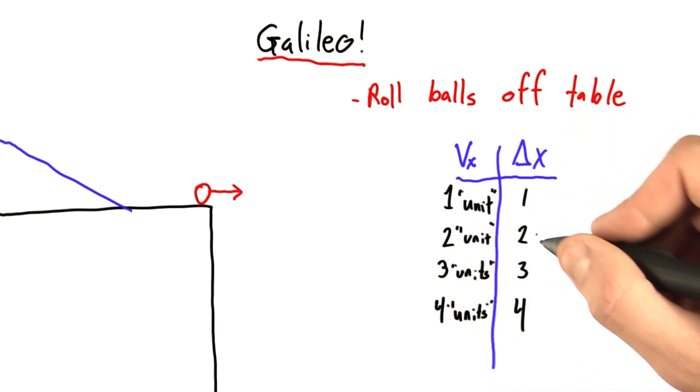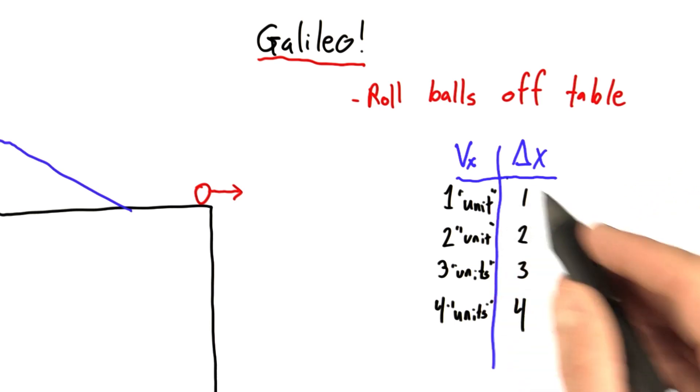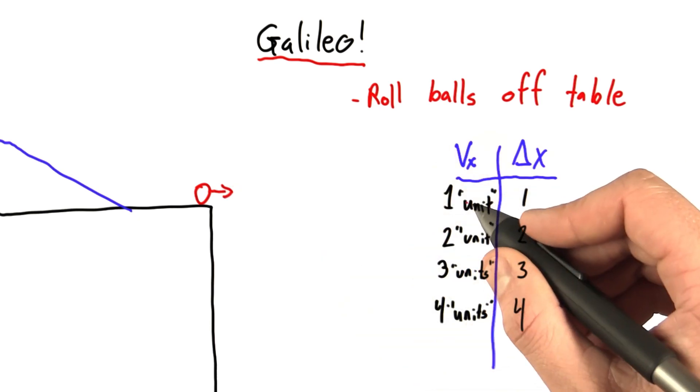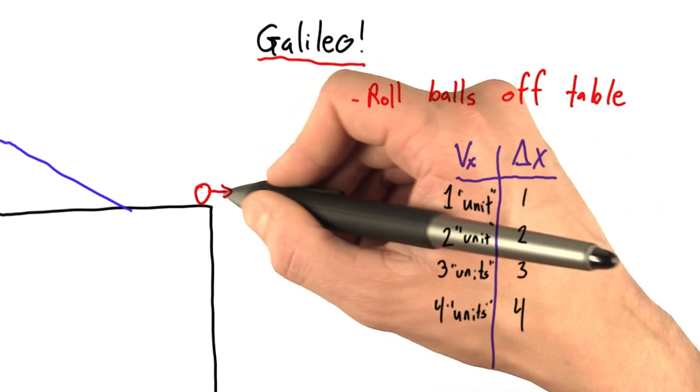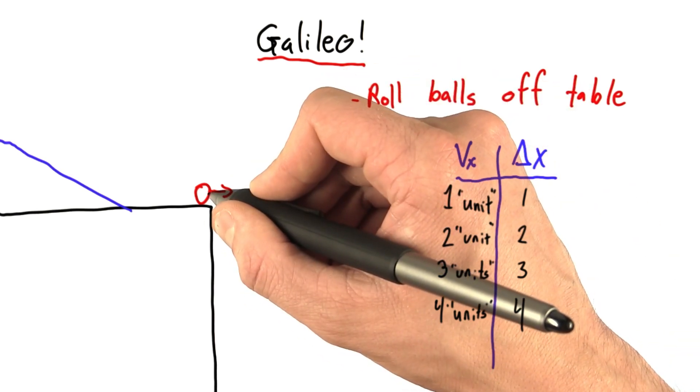And look what he found. Again, these are unitless distances, but look at this correspondence. When the ball had a velocity of one unit, represented here, the trajectory looks something like this.